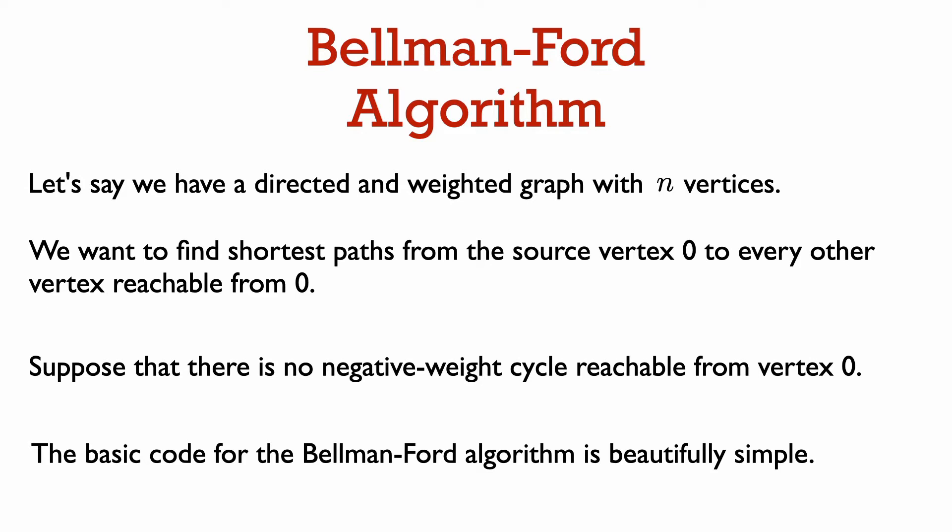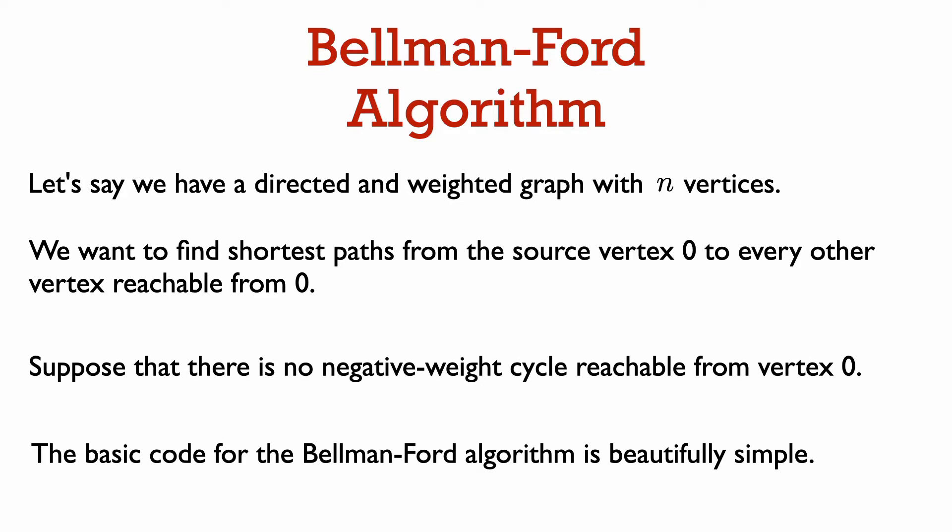The basic code for the Bellman-Ford algorithm is beautifully simple. Here is pseudocode for the main loop of the Bellman-Ford algorithm. When the graph has n vertices, we just repeat relaxing every edge in the graph n minus 1 times.